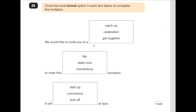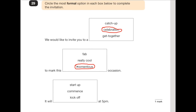Number 29 says: circle the most formal option in each box to complete the invitation. We discussed previously what formal means — basically speaking like the queen, incredibly posh. 'We would like to invite you to a catch-up / get-together / celebration' — they all sound quite informal except 'celebration', so go for that. 'To mark this fab / really cool / momentous occasion' — 'fab' and 'really cool' are definitely not formal, so 'momentous' is the one. 'It will start up / kick off / commence at 5pm' — 'commence' is the most formal of those three.